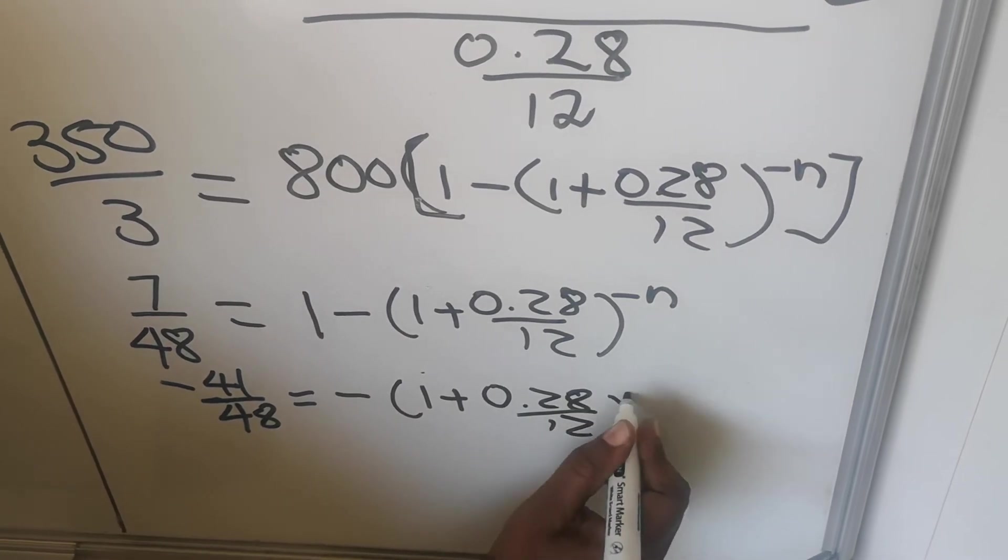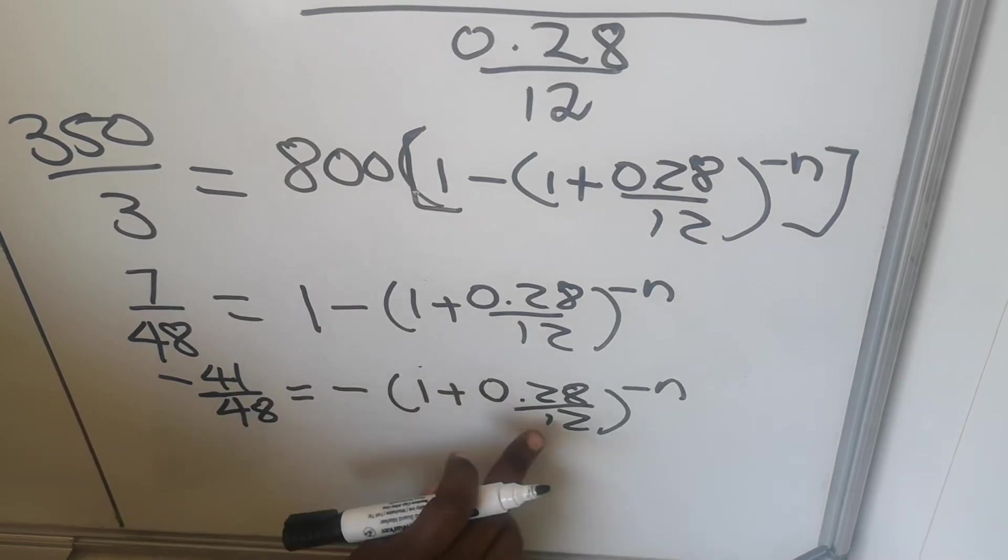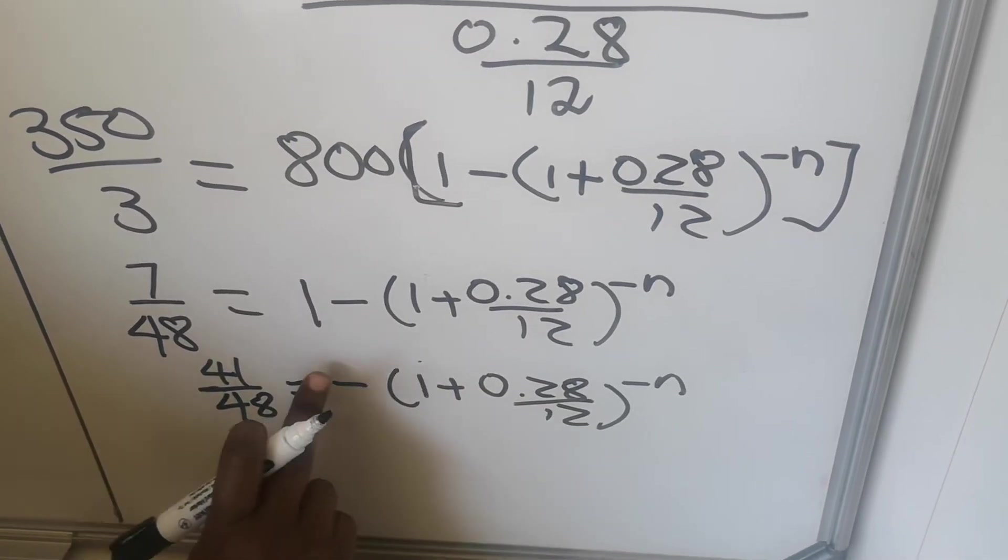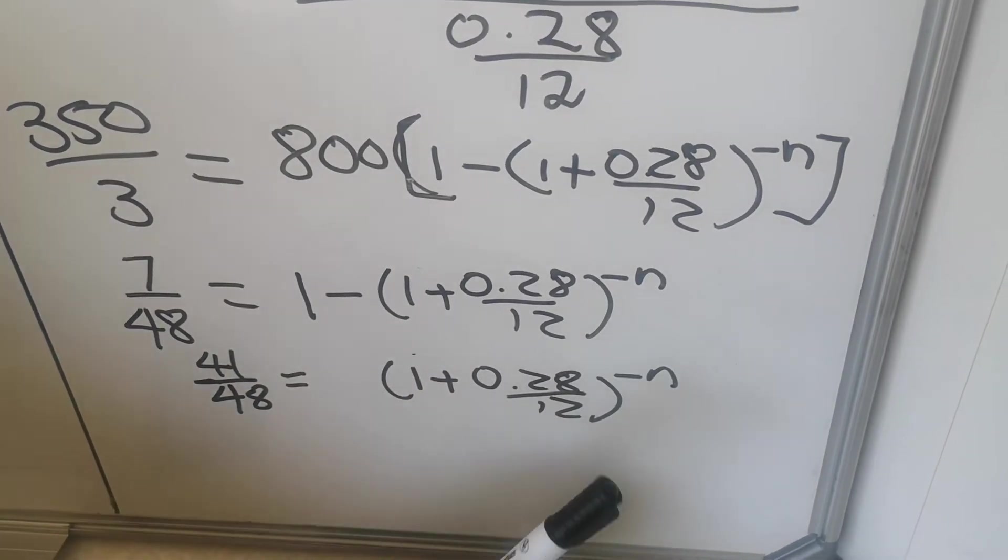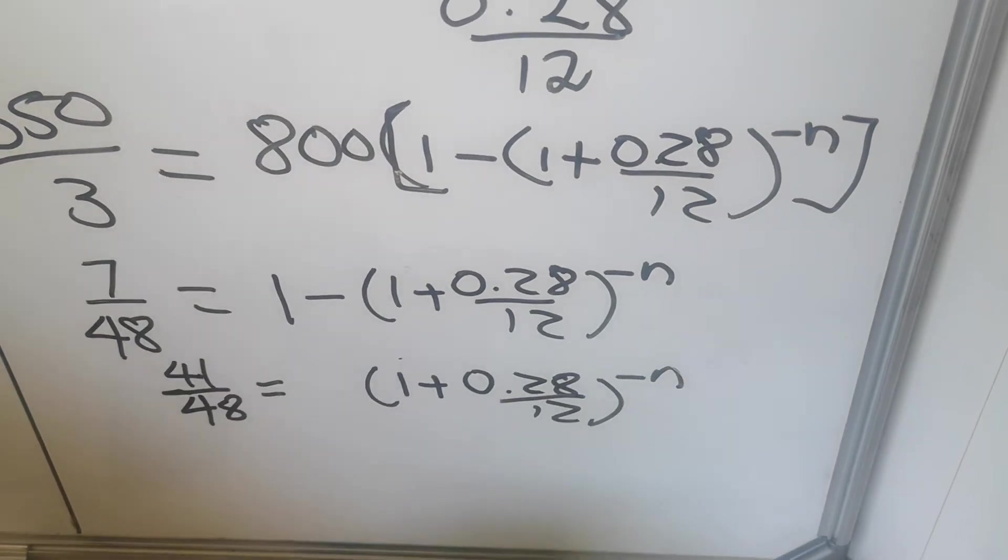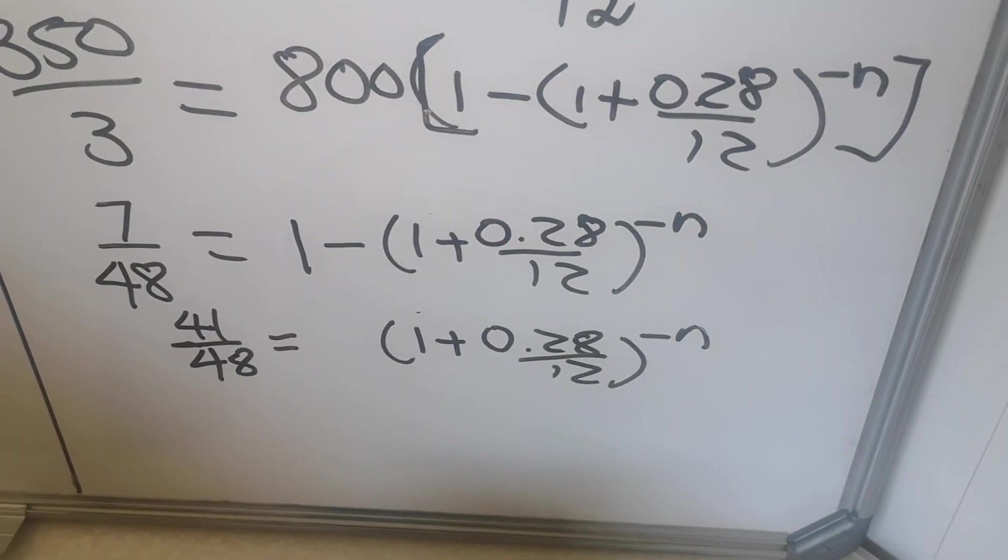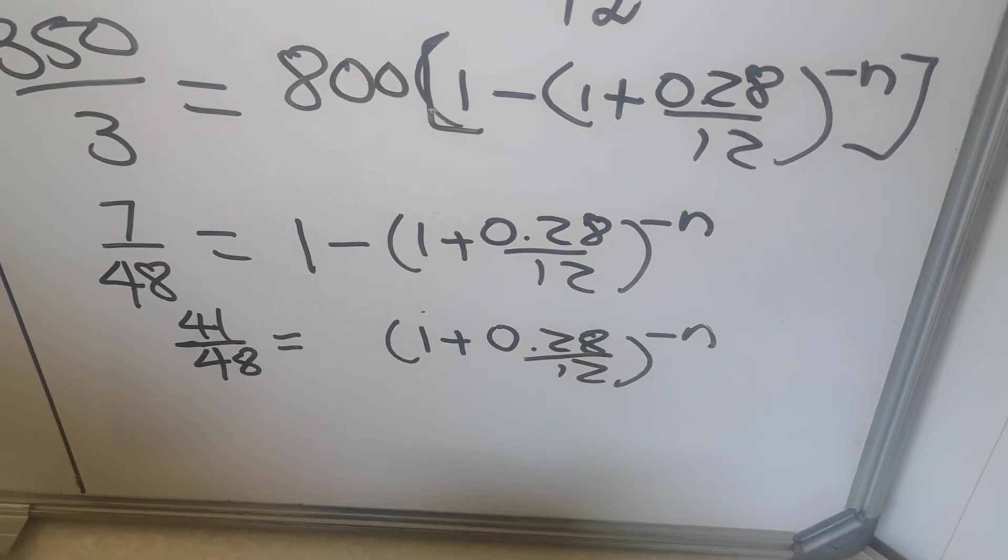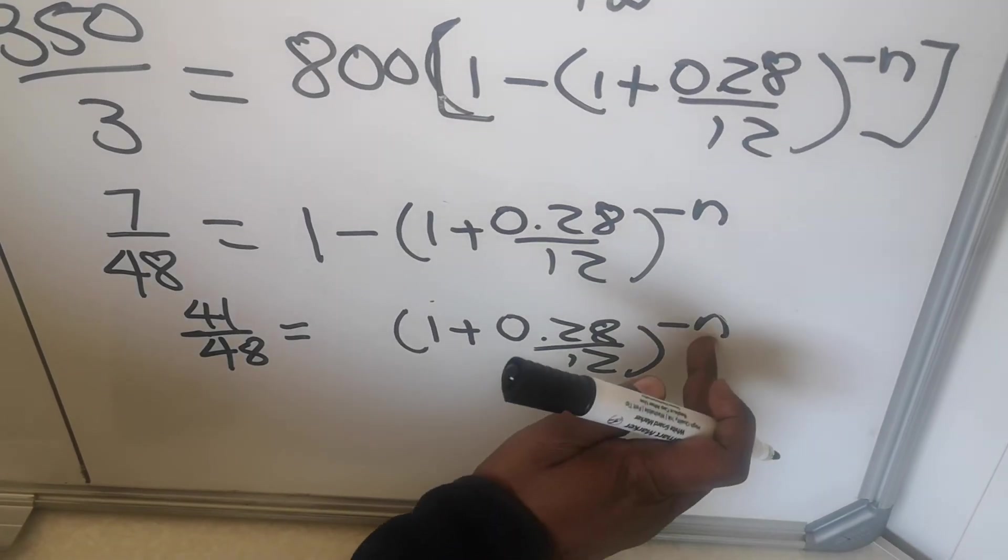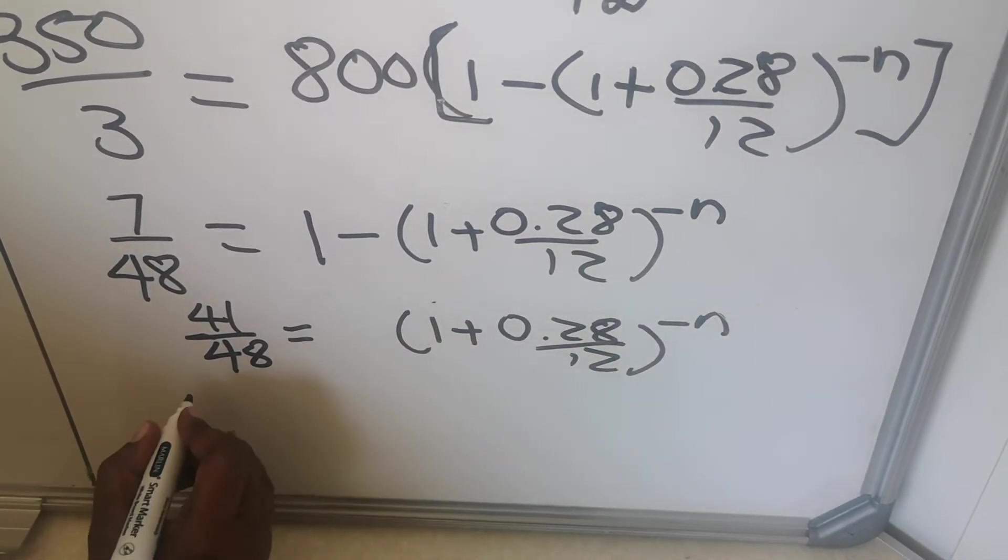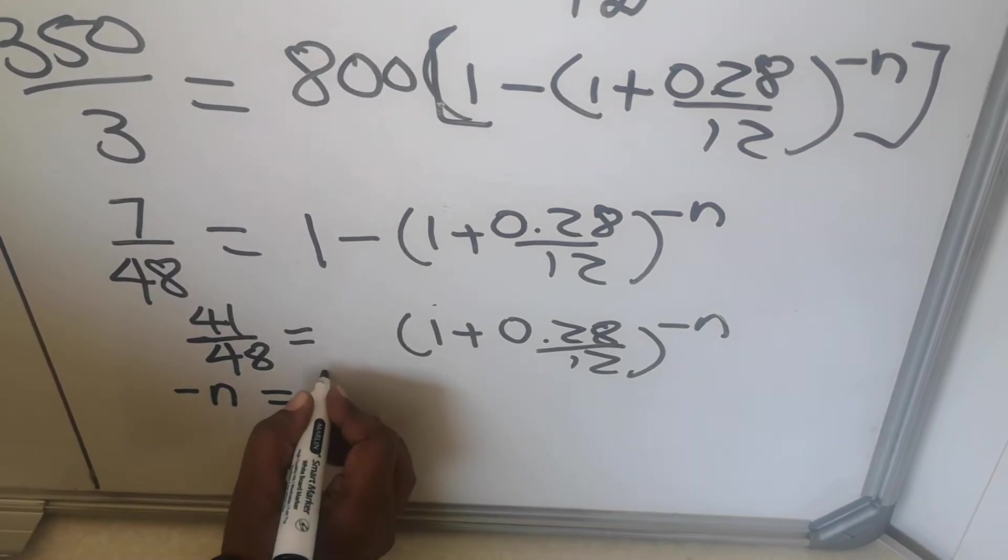Equals to minus, then I have that bracket 1 plus 0.28 over 12 to the power minus n. Minus this side, minus this side - I multiply by minus both sides. The minus goes away, then it will be positive. Because I want the exponent, I'm going to use logs. You're going to use logs that you learned when you're doing financial maths and the inverse of an exponential graph. We use logs. So according to the logs, the one that is an exponent becomes my answer.